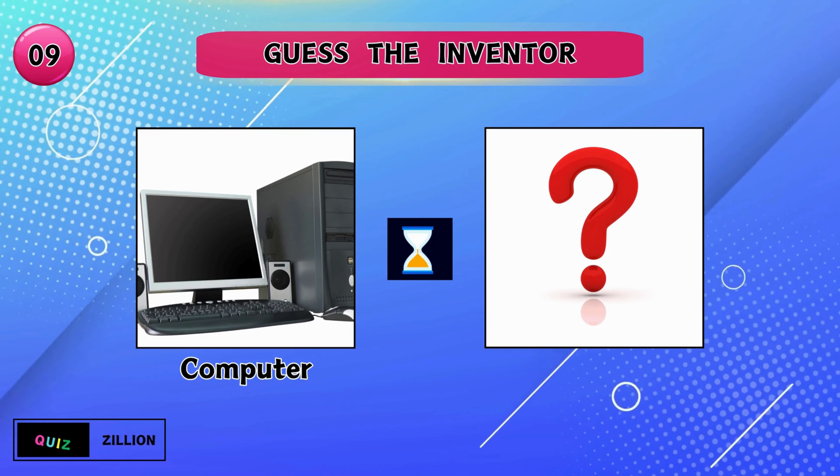Spencer Silver and Arthur Fry found post-it notes. The inventor of the zipper is — Whitcomb Judson discovered the zipper. Which mind conceived the electric blender? Stephen Poplawski found the electric blender.